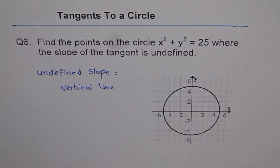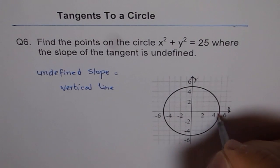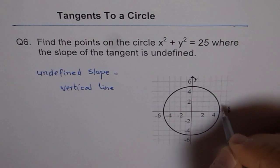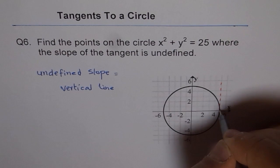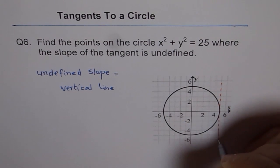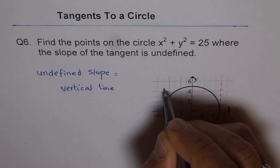So the vertical lines can be actually drawn here. The slope of the tangent will be vertical only at these points. So there are two such points.